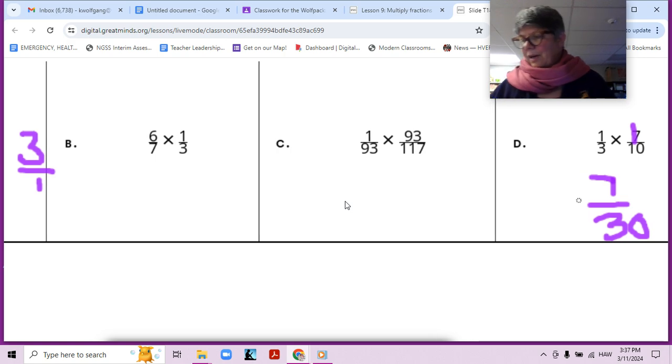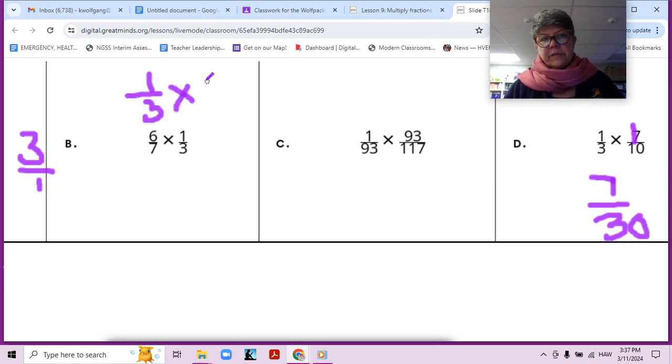Now these two are a little bit more difficult, right? Let's start with this one, a little bit easier. Six sevenths of one third. What if we switch these two around because we have the commutative property of multiplication, and we could do one third of six sevenths. And the reason I did that is because we want our denominator here and our numerator here to be in a fact family, right?